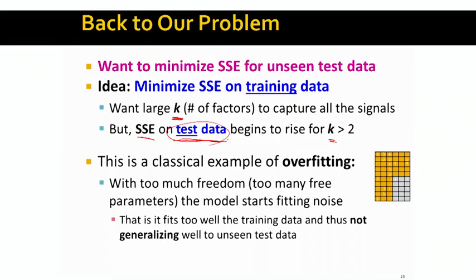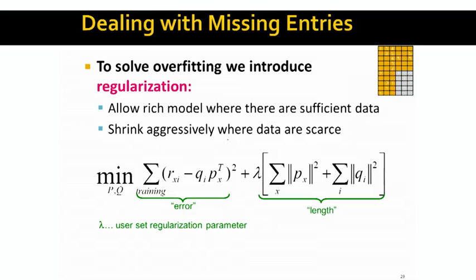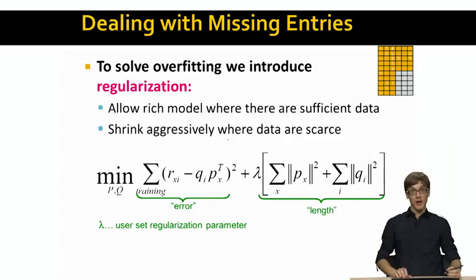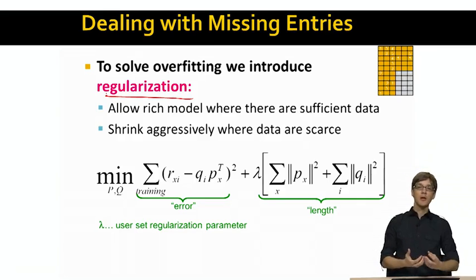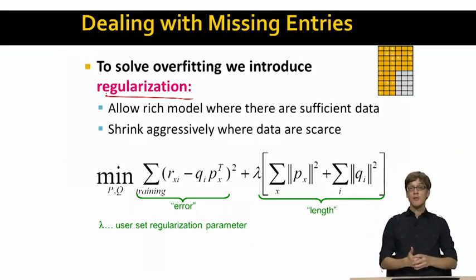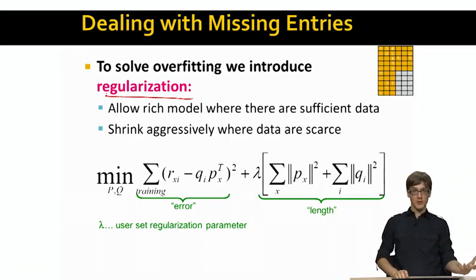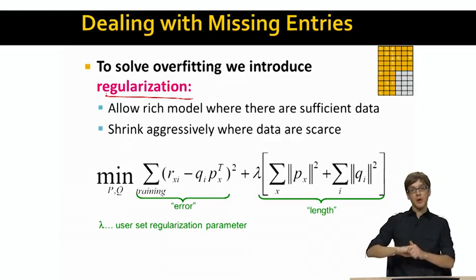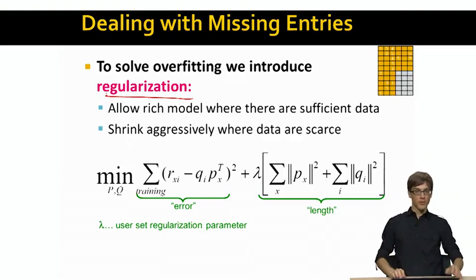The way we go around this problem is by modifying our optimization function. The particular technique is called regularization. The idea with regularization is that we want our model to have rich structure and spend lots of modeling power in areas where we have sufficient data. And then we want our model to be very simple in areas where we don't have enough data — where the evidence is sufficient for complexity we use lots of modeling power, but where we only see a few data points we want the model to be as simple as possible so we don't start fitting the noise.